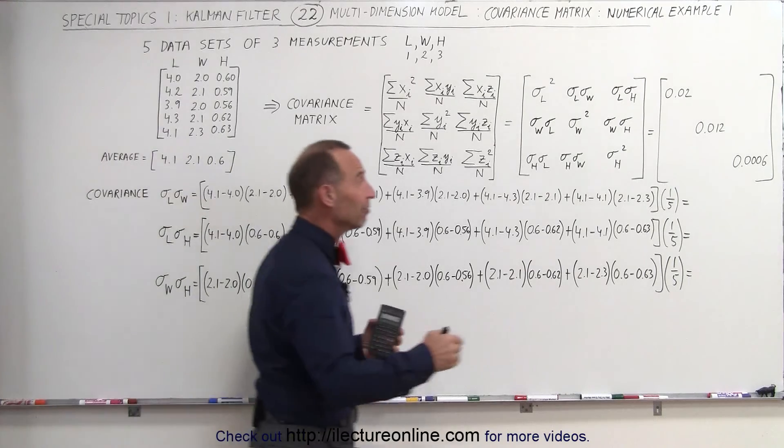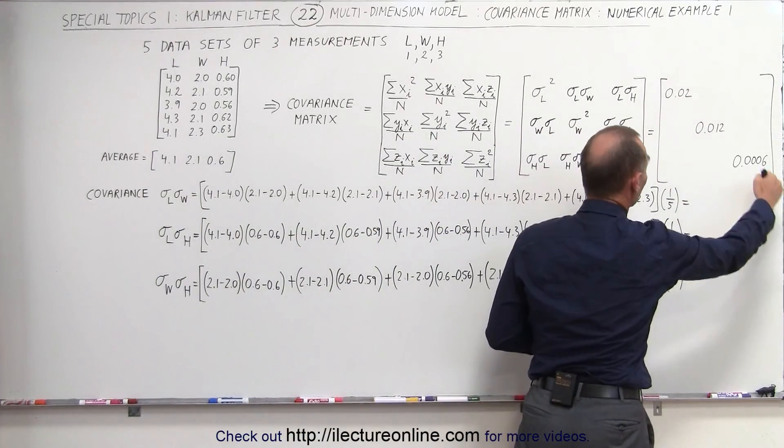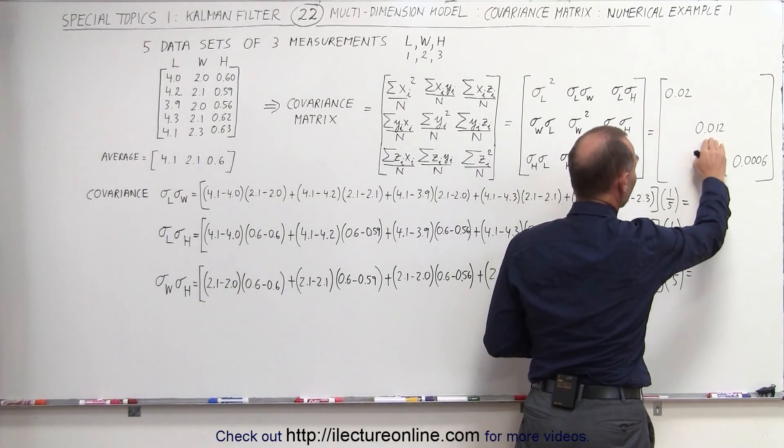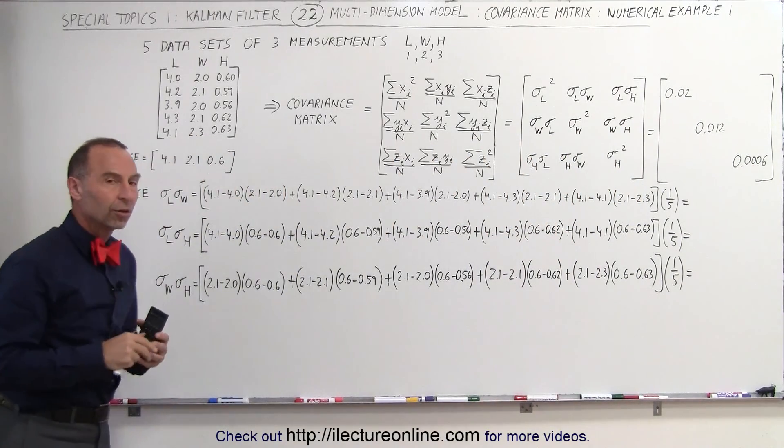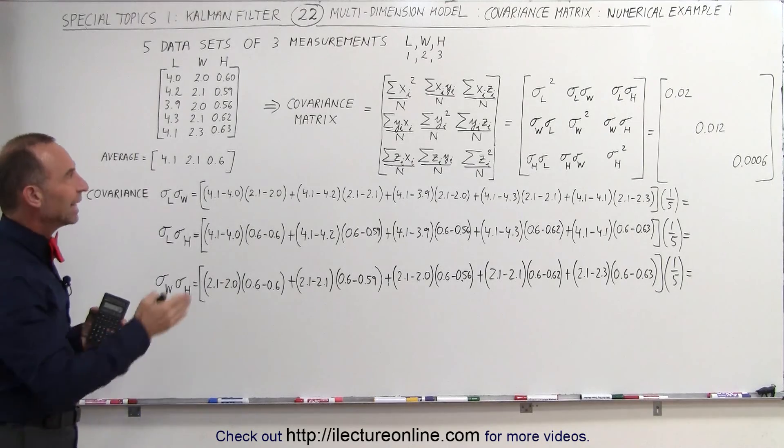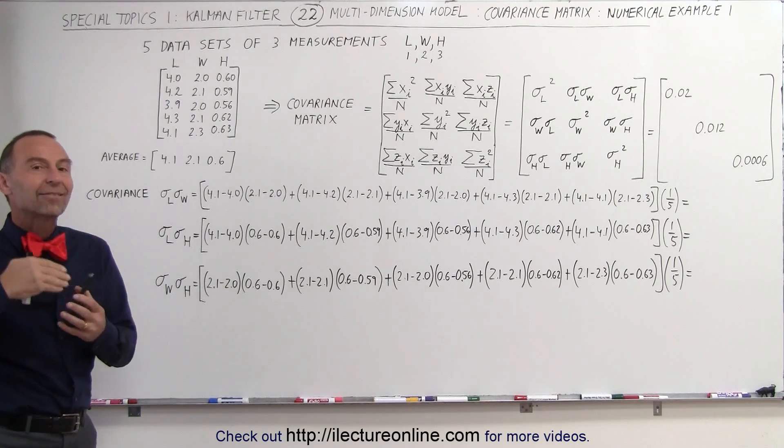In the previous video we had already found the diagonal elements: the variance in the length, the variance in the width, and the variance in the height. Now we're trying to find the covariance, the relationship between the variation in the length, the width and the height against the other variables.